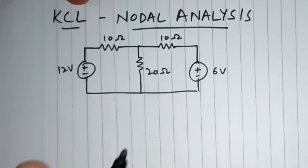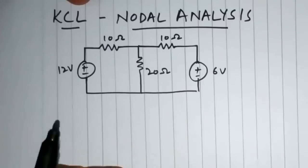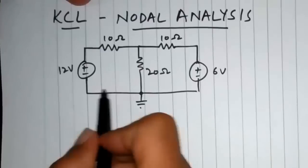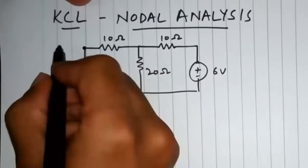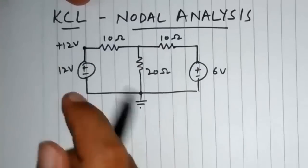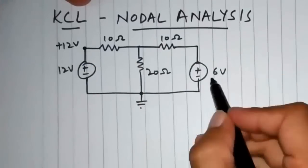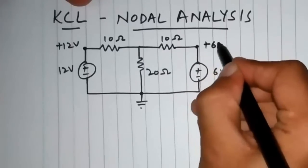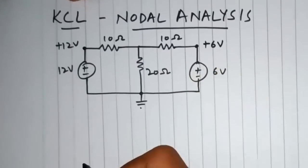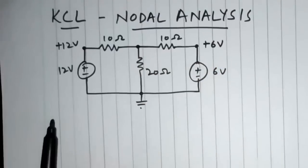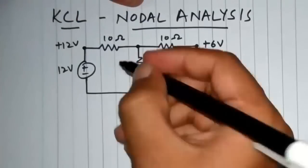So let's assume this node to be the ground node. We can say that this node has +12 volt potential with respect to the ground node, and this one has a +6 volt potential with respect to this node. The only node whose potential we do not know is this node, and let's say that this node has a voltage of N volts.